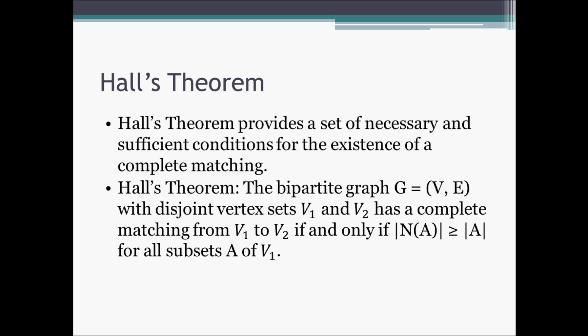Now that we've covered the concepts of a bipartite graph and a complete matching, we're ready to discuss Hall's Theorem. Hall's Theorem provides a set of necessary and sufficient conditions for the existence of a complete matching. The bipartite graph G with vertex set V and edge set E, with disjoint vertex sets V1 and V2, has a complete matching from V1 to V2 if and only if the cardinality of N(A) is greater than or equal to the cardinality of A for all subsets A of V1.